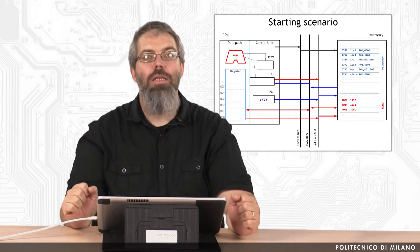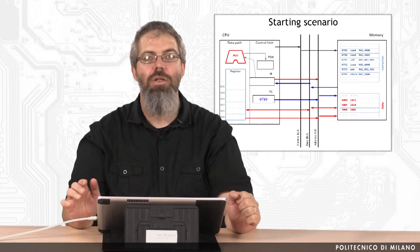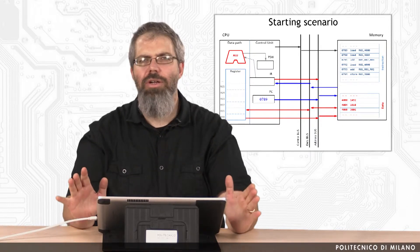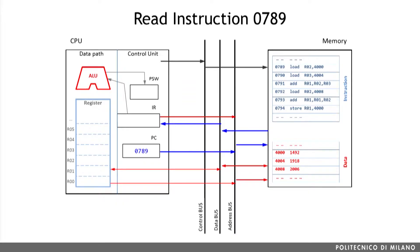Going back to our example, the program counter, also abbreviated as PC, is storing the value of the next instruction that has to be executed. We are also assuming that all the data and instructions are stored in the memory, which is quite a strong assumption, but acceptable for this example. First of all, we have to read instruction 0789, which was the value stored in the program counter. Reading instruction 0789 is an operation involving several tasks — because of the value 0789 we are accessing the memory at the corresponding address. The control unit is sending a read command on the control bus to load the necessary information from the memory to the latch register.